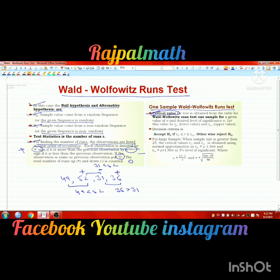For the critical value, we calculate the lower and upper critical values at the 5% significance level. We accept H0 if R lies between the lower critical value and the upper critical value; otherwise we reject H0.